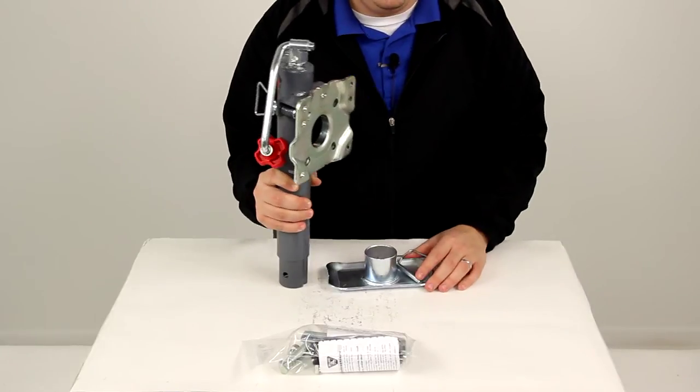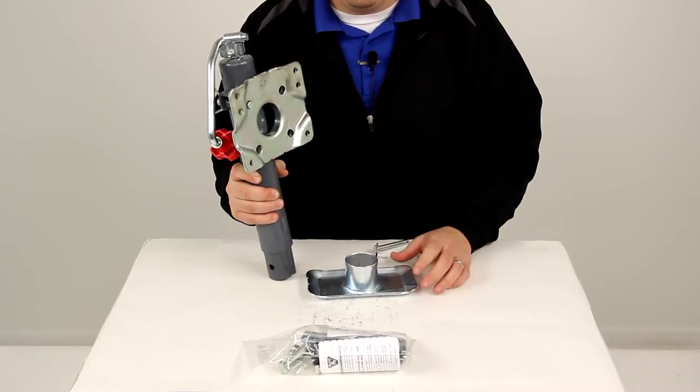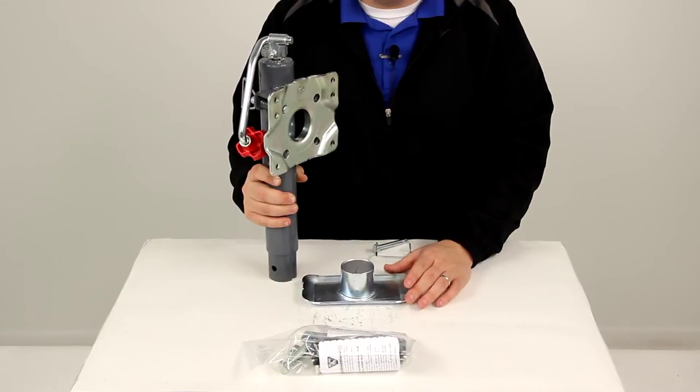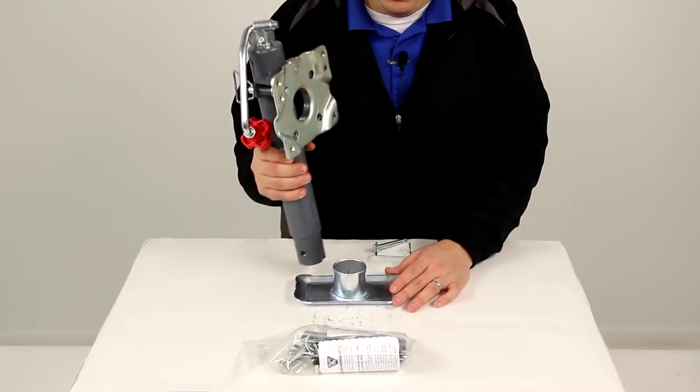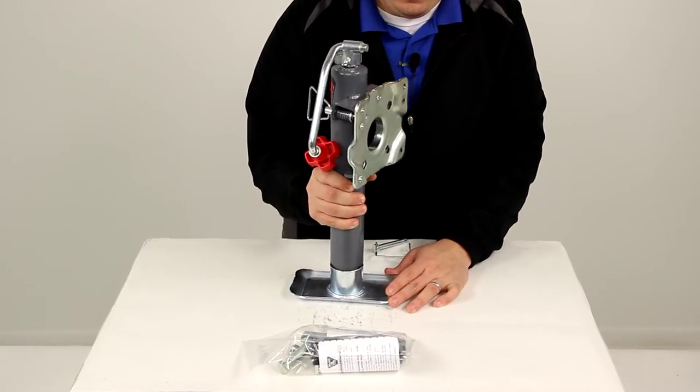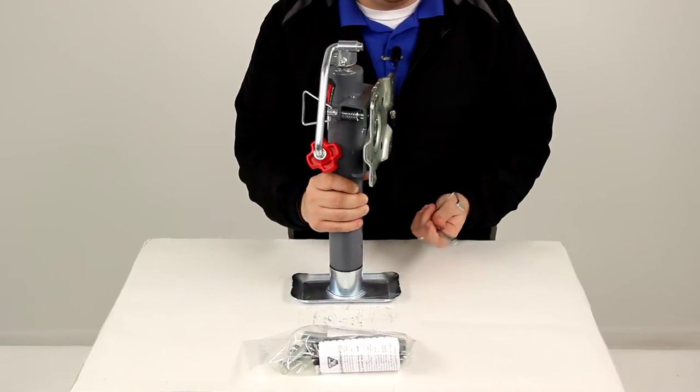The other accessory is the standard foot plate. This is available and sold separately with part number BD018564. It's going to install the same way, and you would also use the pin and clip to secure it in place.